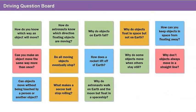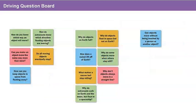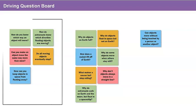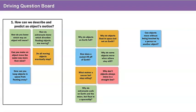Wow, look at all of these questions. Can we group similar questions into categories? Once we sort these questions into categories, we'll have our driving question board. We will refer to the driving question board throughout the module as we seek to answer our questions about the motion of objects on earth and in space. Does your question have to do with figuring out how an object moves or where an object will move next? Then your question falls into category one: how can we describe and predict an object's motion? We can put questions like how can you keep objects in space from floating away, and do all moving objects eventually stop, into this category.